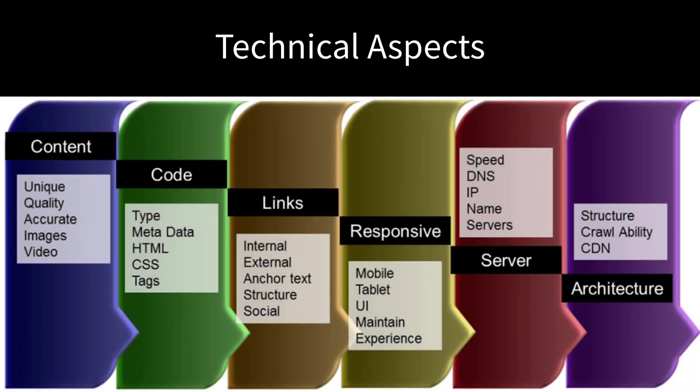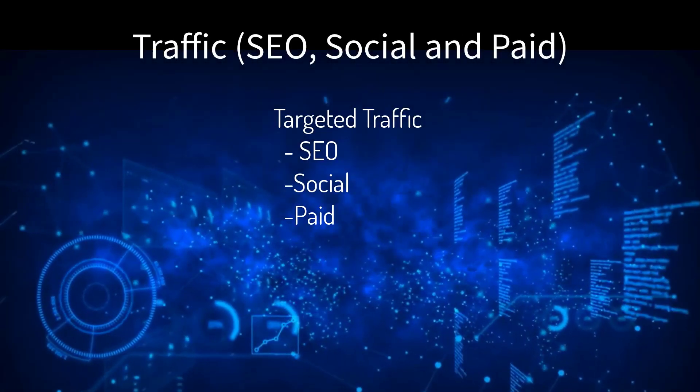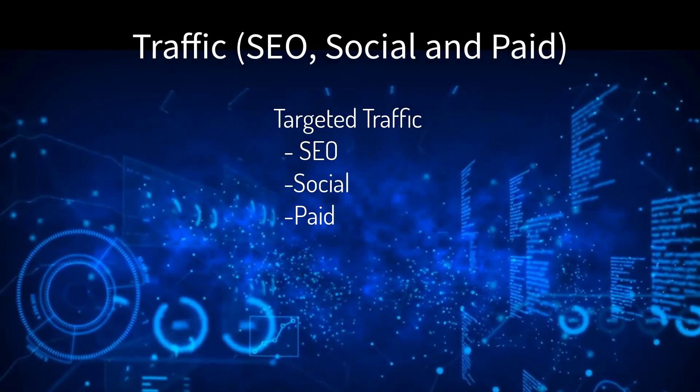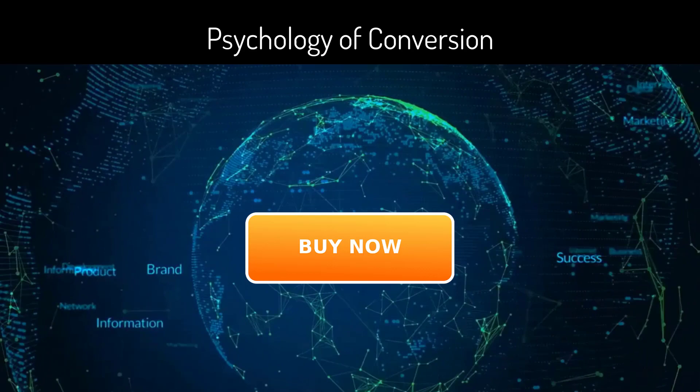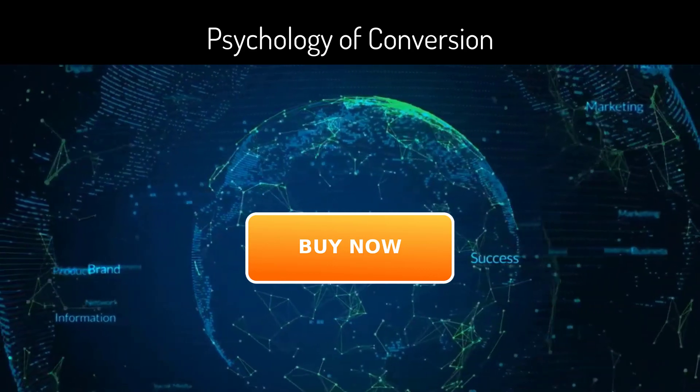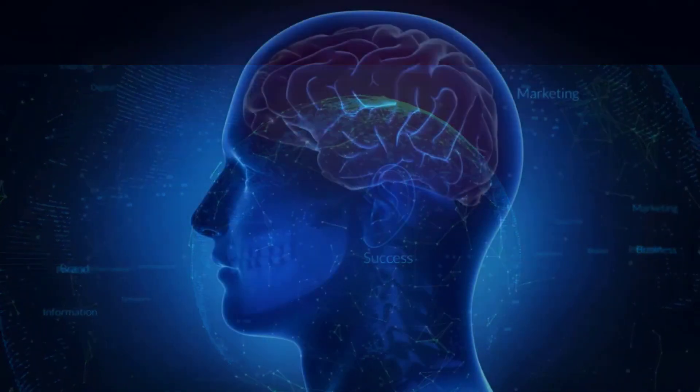Of course, all online marketing must have three elements in alignment: the technical aspects — servers, layout, code structure — the traffic — SEO, social, and paid — and the psychology of conversions.